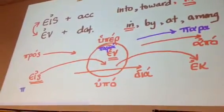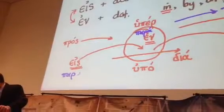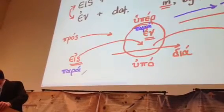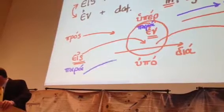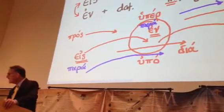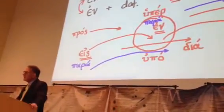And para plus the accusative sounds a little bit like pros and ace because para plus the accusative means alongside of and has the implication that you've come not into but alongside of and has that emotion associated.